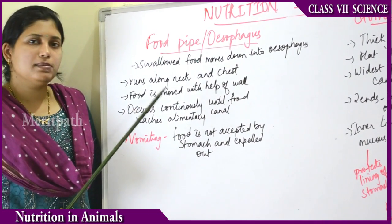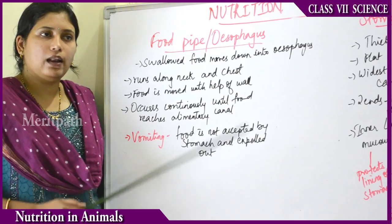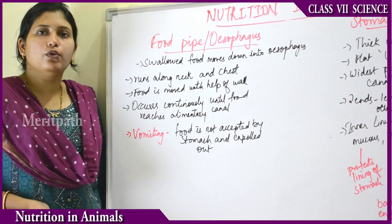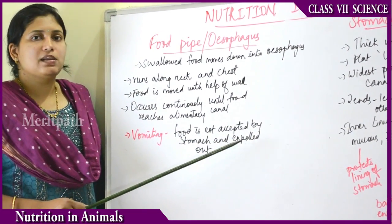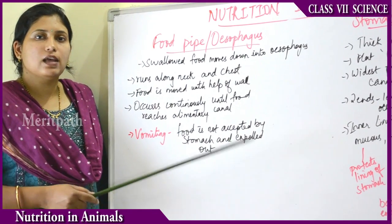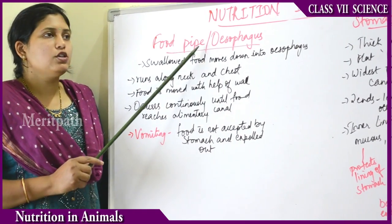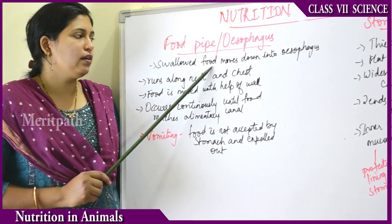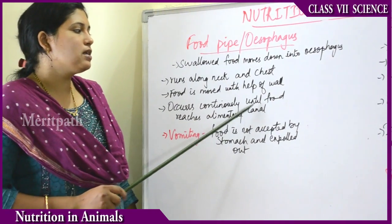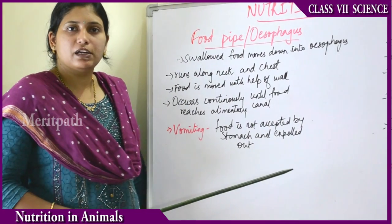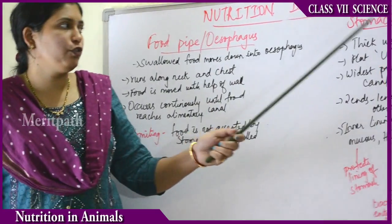The food movement in the walls of the esophagus occurs continuously until the food reaches the alimentary canal or the stomach. Sometimes vomiting occurs because certain walls in the stomach sometimes do not accept the food and repel it back into the throat. This results in vomiting. The esophagus moves the food further down into the alimentary canal, and if vomiting occurs the food repels back via the walls of the esophagus.